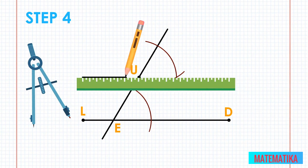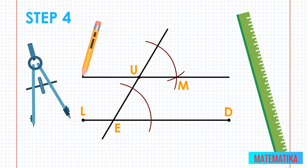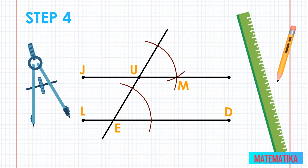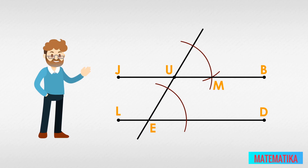Use your straight edge to construct a line that passes through the original point above your first line and through the newly labeled point. In our example, that means a line through point U and point M. Put endpoints on that line and label them. In our example, we use point J on the left and point B on the right. We have now constructed line JB, passing through points U and M, and parallel to line LD, which passes through point E. You have constructed a line parallel to your original line without measuring anything.